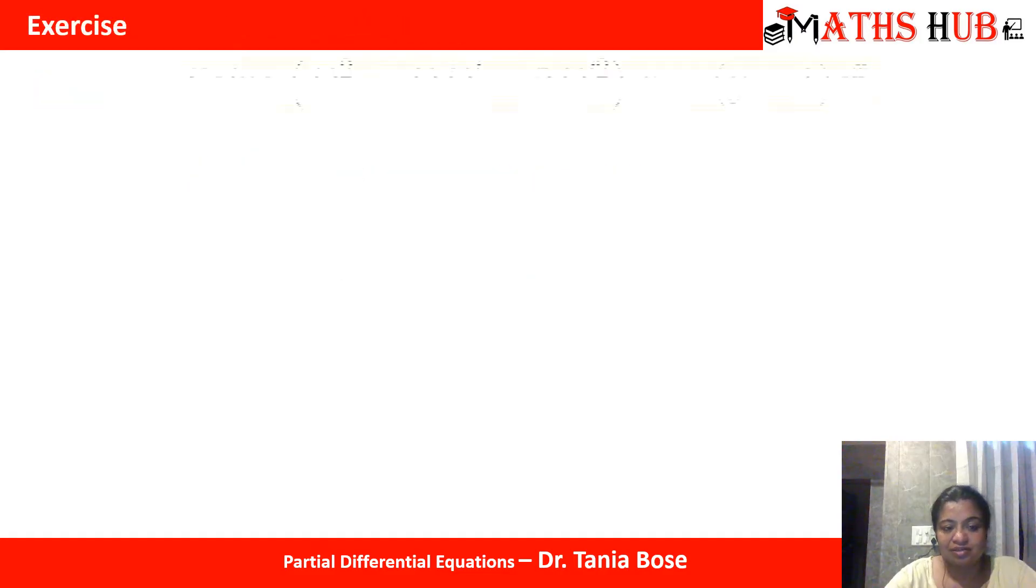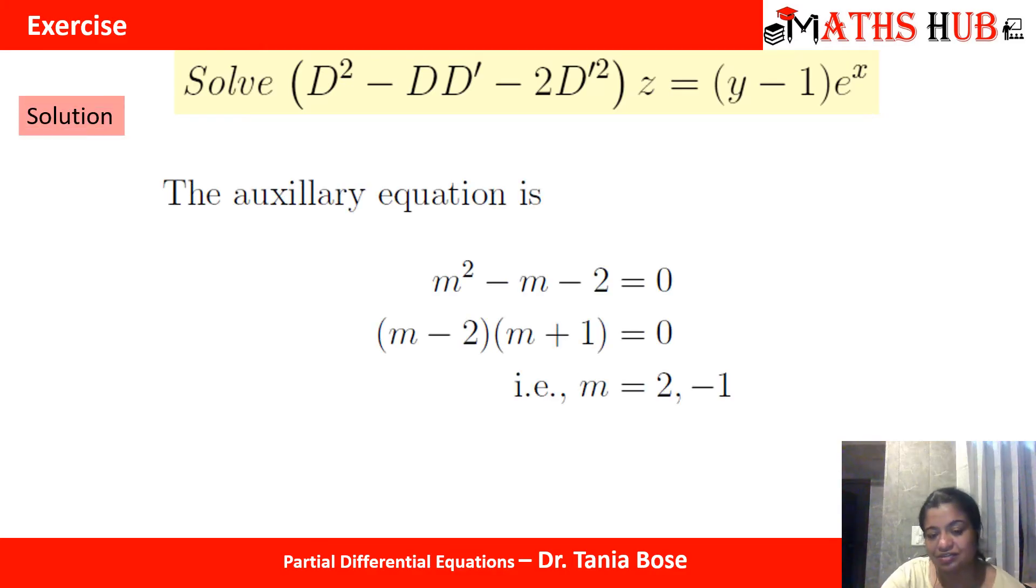Let us try to solve this question. We need to solve d square minus d d dash minus 2 d dash square into z equals (y minus 1) e raised to power x. The homogeneous solution you can calculate very easily. The roots will come out to be 2 and minus 1. So we can find out the complementary solution as f1(y plus 2x) plus f2(y minus x).